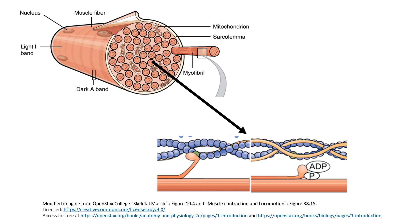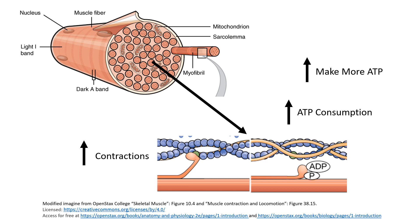Since ATP is necessary for muscle fibers to contract, any time there is an increase in the force of contraction and or the frequency of contraction, the muscle fiber is going to consume more ATP. An increase in ATP consumption is the same as an increase in ATP demand. The muscle fiber must start making more ATP to meet this demand, otherwise it could consume all of its ATP, which could result in cell death.